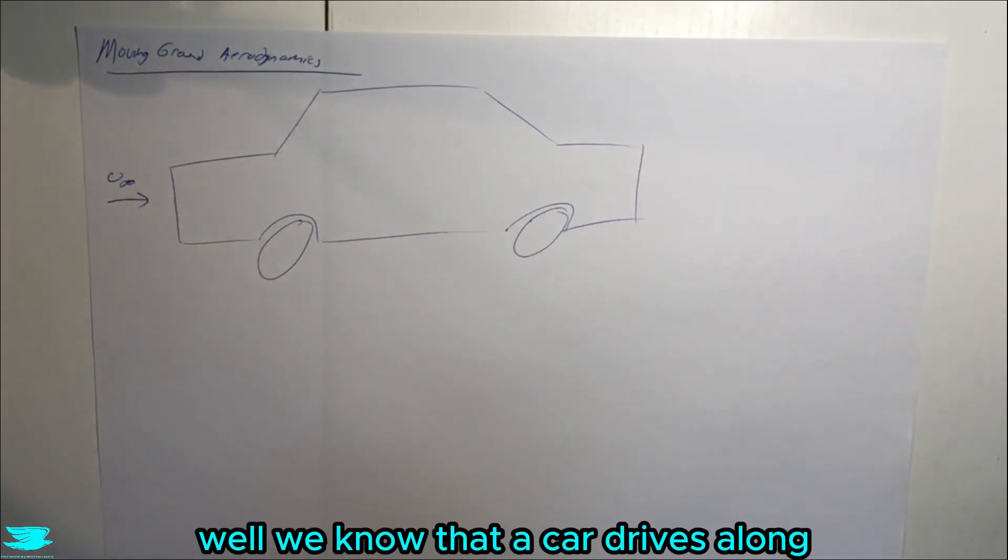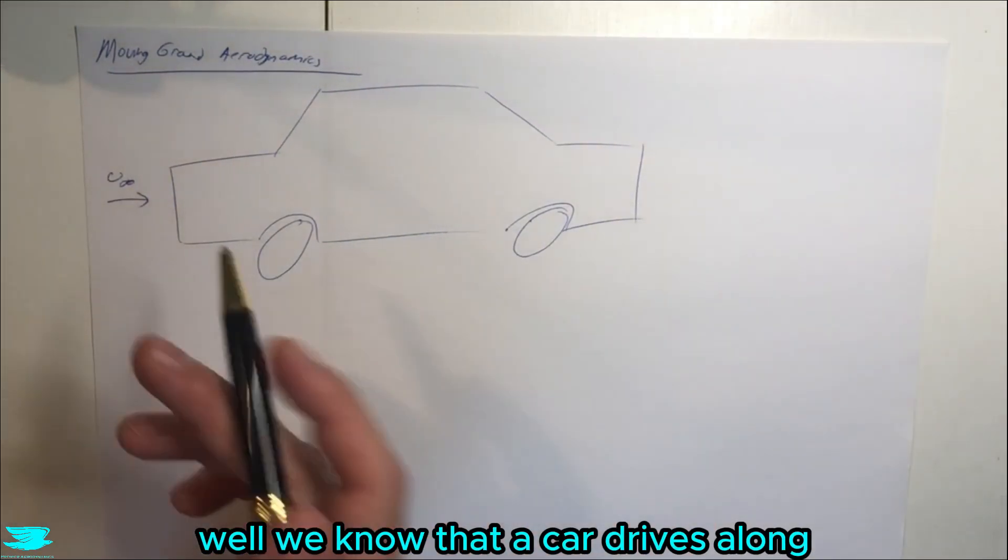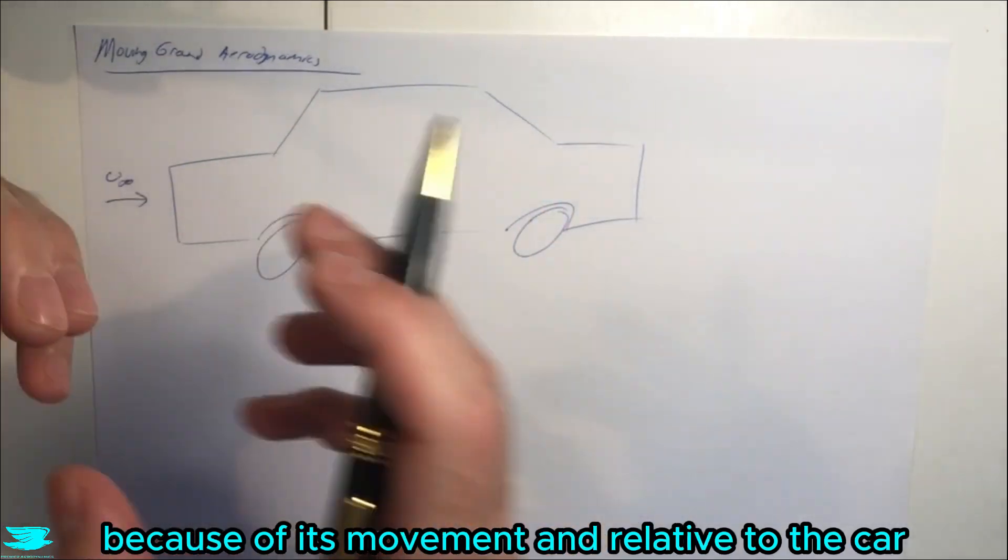So what does this refer to? Well, we know that a car drives along and there'll be a free stream flow hitting it because of its movement.